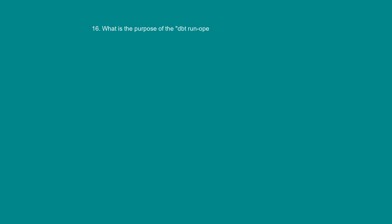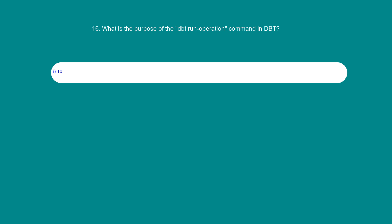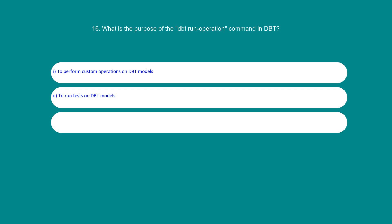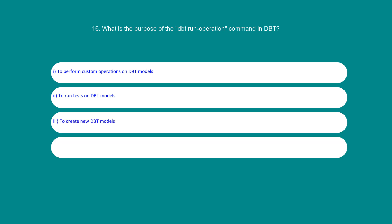What is the purpose of the dbt run-operation command in dbt? Option 1: To perform custom operations on dbt models. Option 2: To run tests on dbt models. Option 3: To create new dbt models. Option 4: To execute custom code blocks in dbt. The answer is 1: To perform custom operations on dbt models.